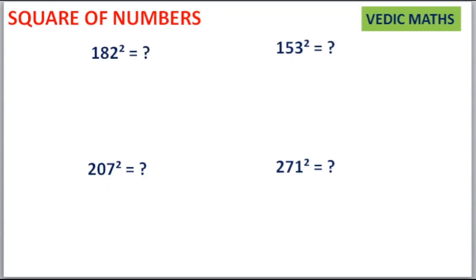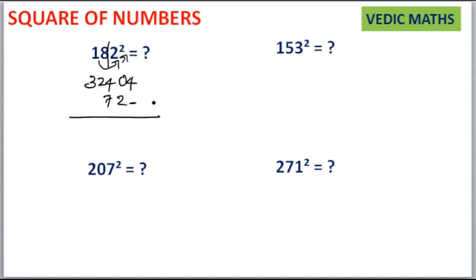Next is a 3-digit number. Use the same method as before, but we separate 182 as 18 and 2. Your RSS has 1 digit, so double the square: 2 into 2 is equal to 4, write it as 04. Then 18 squared is equal to 324, write it as 324. Then 18 into 2 is equal to 36, and 36 into 2 is equal to 72. Leave the unit place, then write 72 here. Adding together gives you 33124 as your answer.